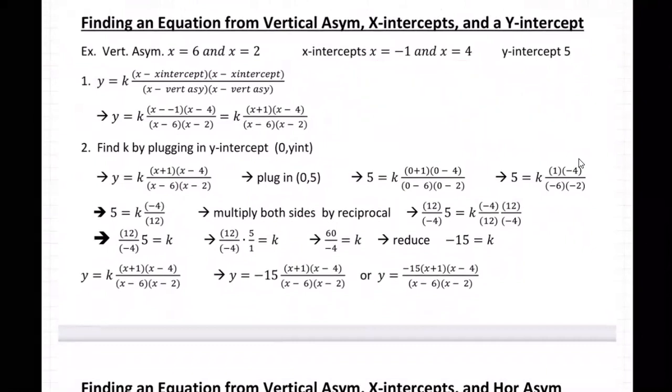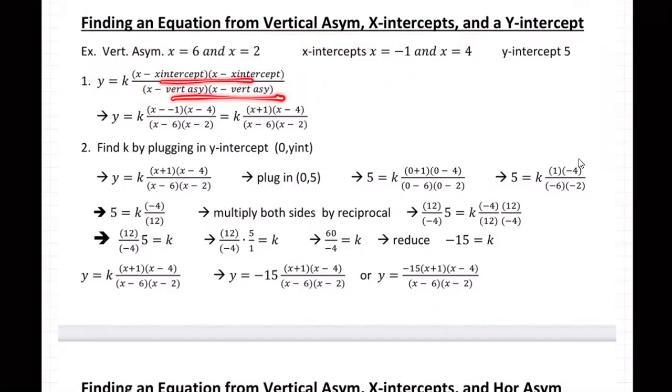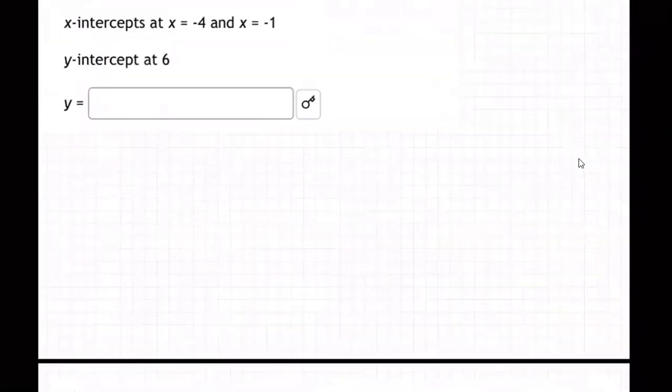So here's the steps. These are the exam three notes, which are at the top of the unit three module in our Canvas course shell. So what do you do? On number one, I go y equals k times x minus x-intercept, x minus x-intercept over x minus vertical asymptote, x minus vertical asymptote. So notice we put the x-intercepts at the top, and the vertical asymptotes we put at the bottom. Vertical asymptotes on the bottom, x-intercepts on the top. That's the first step.